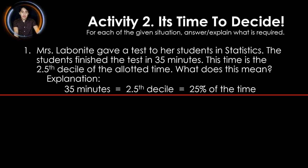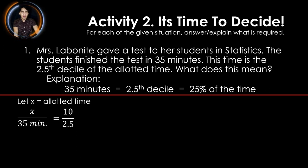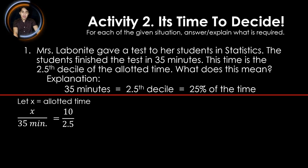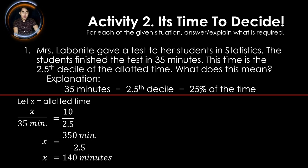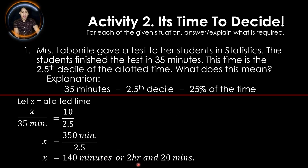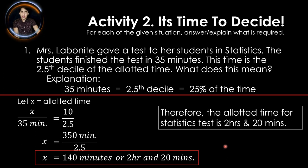Therefore, the students already finished the test within 25% of the time. To find how much time Mrs. Labonete gave, we let x as the allotted time. Then x over 35 minutes equals 10 over 2.5, where 10 represents the whole allotted time and 2.5 represents the decile for 35 minutes. Cross multiplying: x equals 350 over 2.5. Dividing 350 by 2.5, x equals 140 minutes, which is 2 hours and 20 minutes. Therefore, the allotted time for the statistics test is 2 hours and 20 minutes.